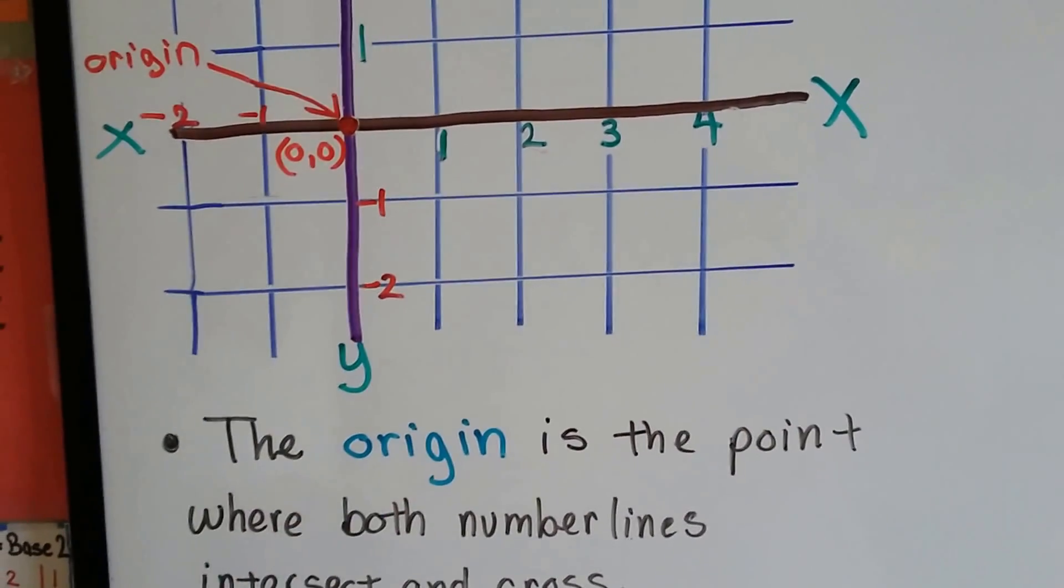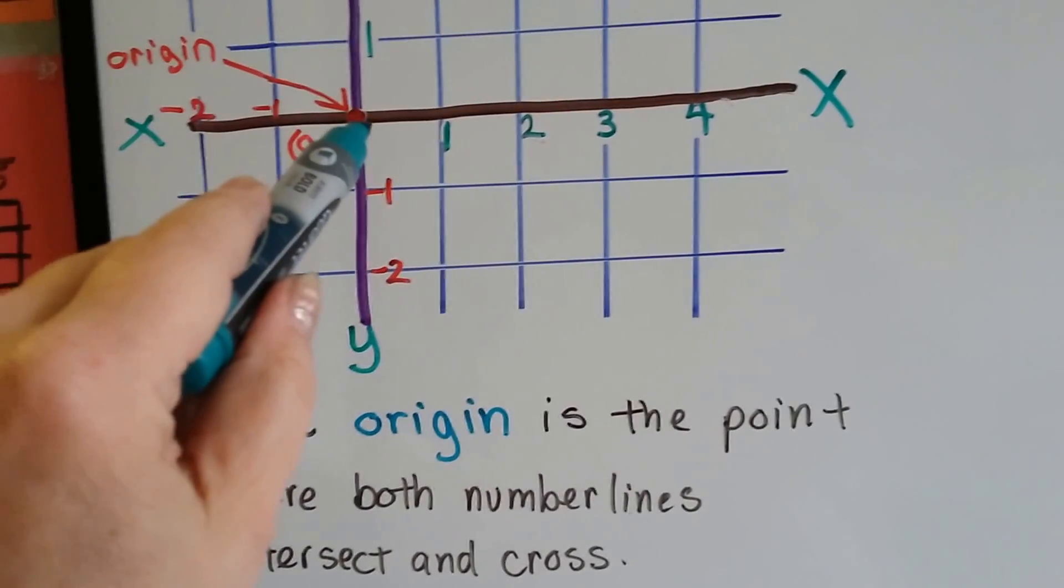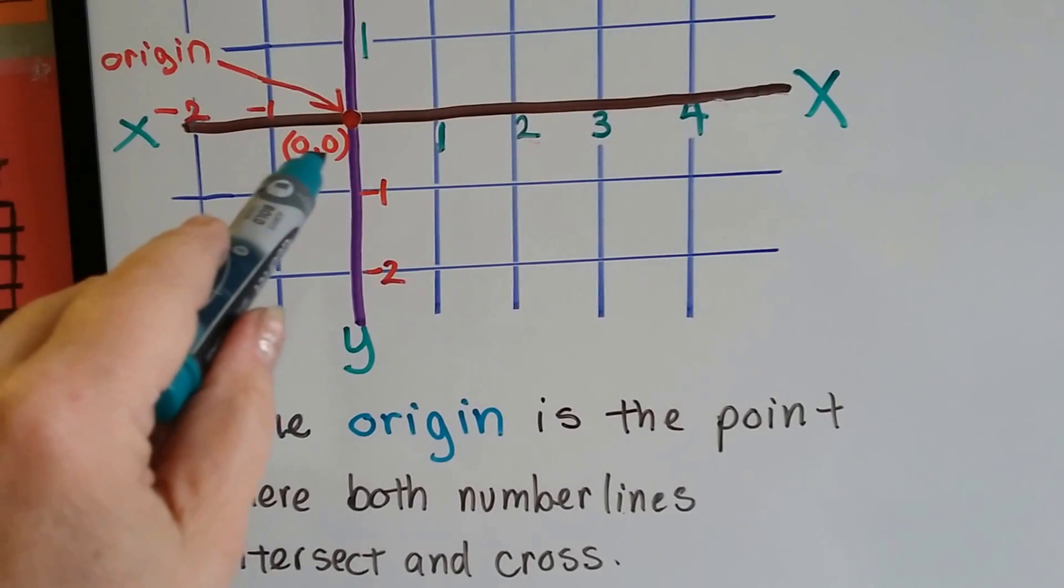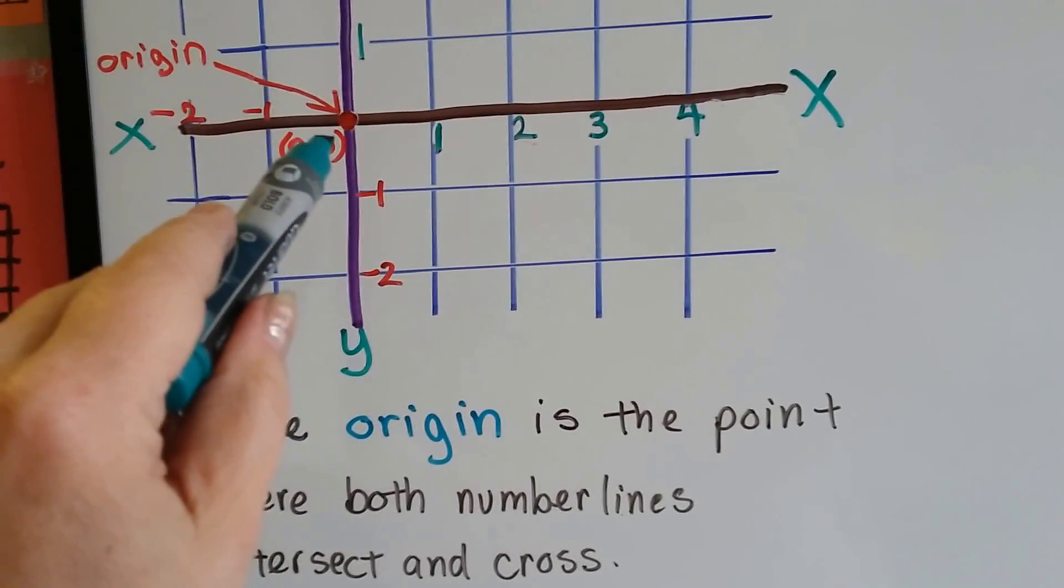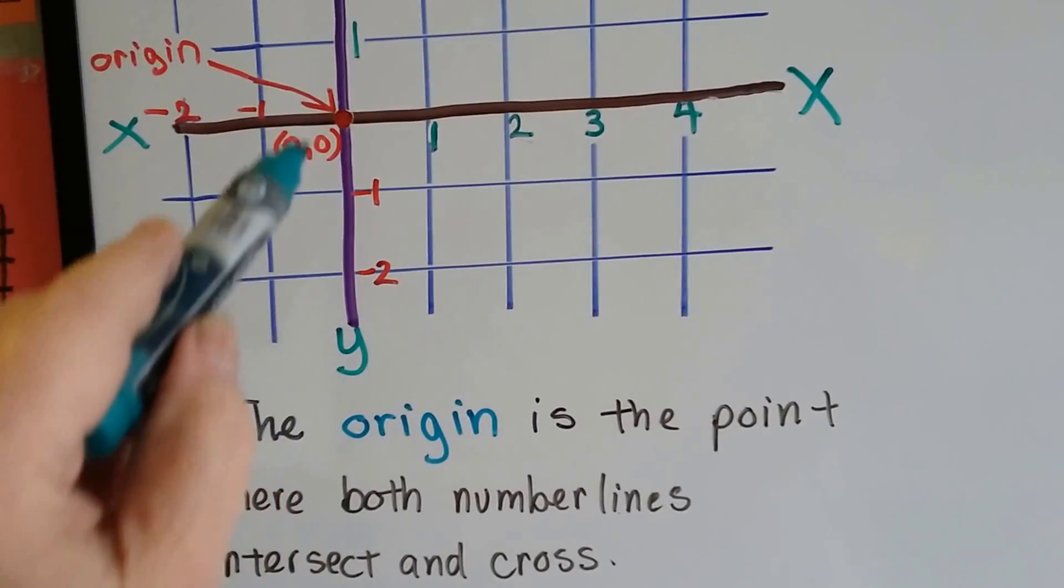So the origin is the point where both number lines cross. They intersect right here. It kind of looks like a little face, doesn't it? But it's zero comma zero in parentheses, and it's called the origin.